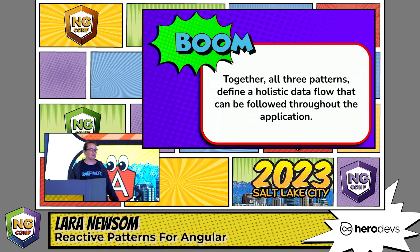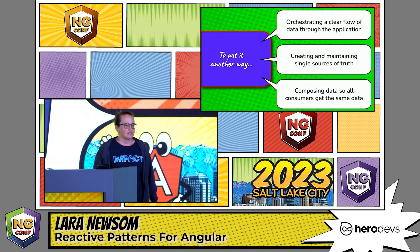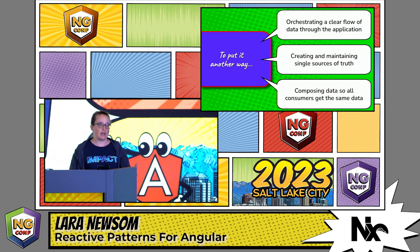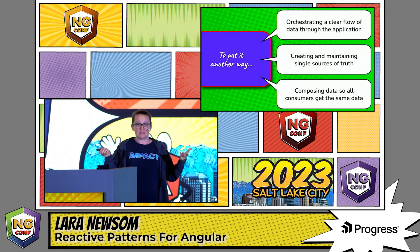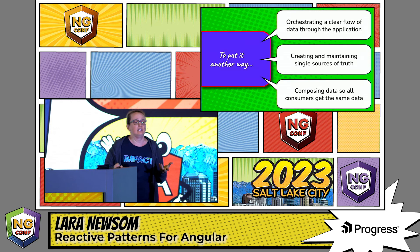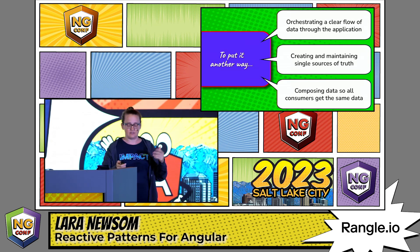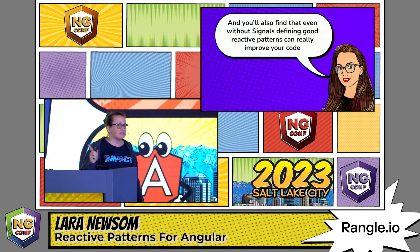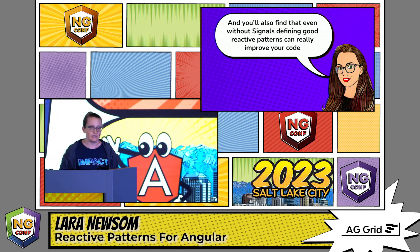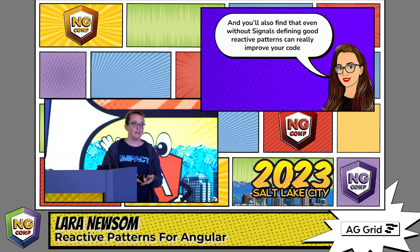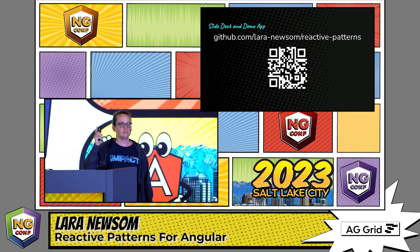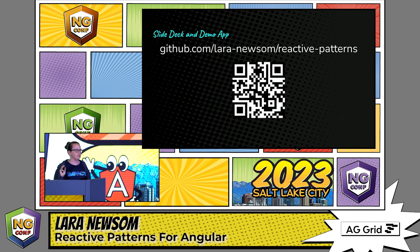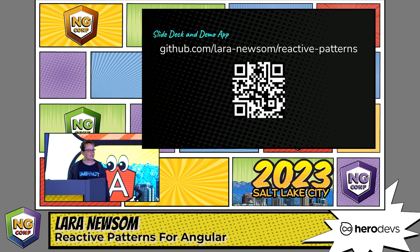Using all three patterns together, we can define a holistic data flow that can be followed throughout the application. We are orchestrating a clear flow of data, creating and maintaining single sources of truth, and composing our data so all consumers get the same data at the same time. Even if you're not using signals, if you take time to rethink the data flow through your application, your code is going to be easy to read, easier to maintain, and more performant for your users. There's a GitHub repo with code examples — and nobody is allowed to start the just-like-us pet boutique. That's mine. Thank you.